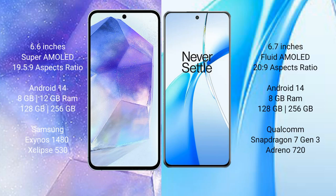Samsung Galaxy A55 comes with a 6.6-inch Super AMOLED display and aspect ratio 19.5:9. OnePlus Nord CE4 comes with a 6.7-inch Full HD+ AMOLED display and aspect ratio 20:9.